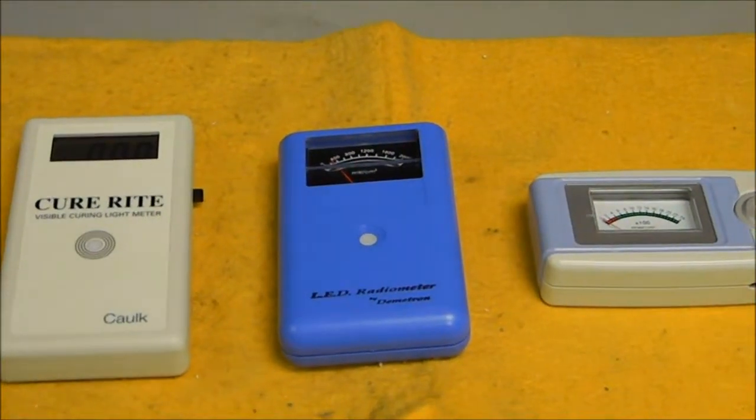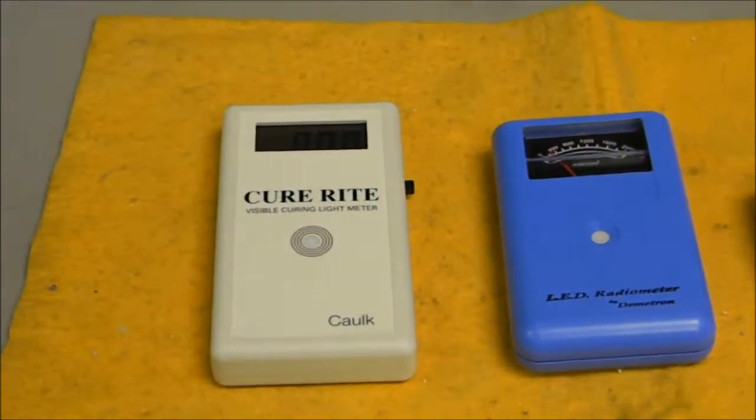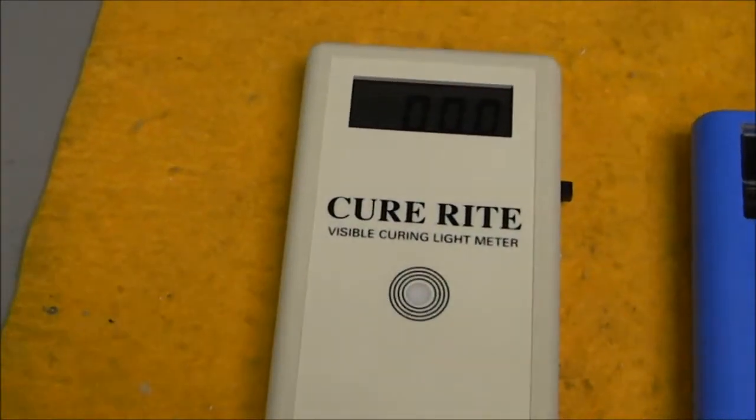Let's take a look at how our three radiometers measure the output of the ARP L5 LED curing light. We'll start with the Curite visible curing light meter from Densply.